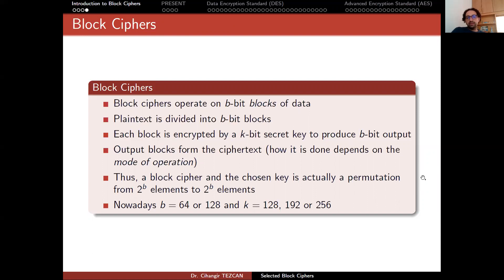A block cipher with a chosen key is actually a permutation from 2^b elements to 2^b elements. Nowadays we choose the block size as 64 bits or 128 bits, giving you 8 or 16 bytes. There are some lightweight cryptographic algorithms with shorter block sizes like 32 bits. For key length, nowadays we use 128 bits, 192 bits, or 256 bits. We don't recommend using a key shorter than 128 bits.